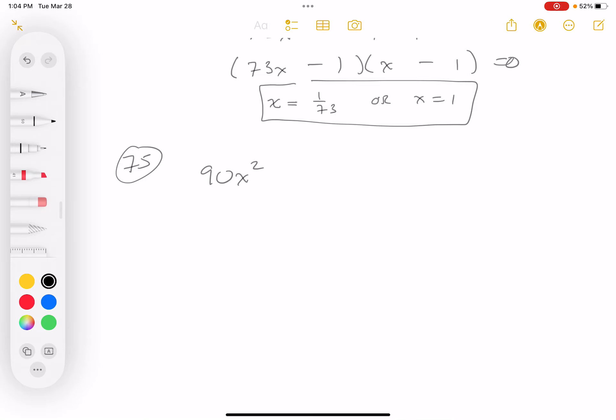All right, we're on 75, which is 90x squared minus 75x minus 375 equals 0.